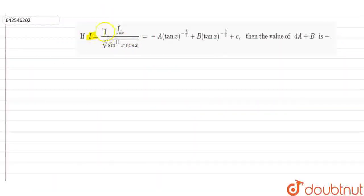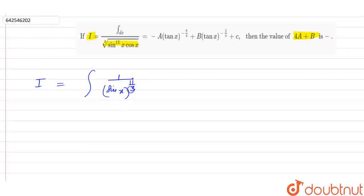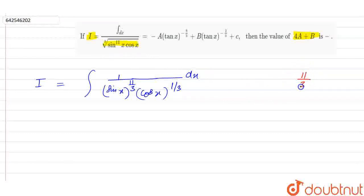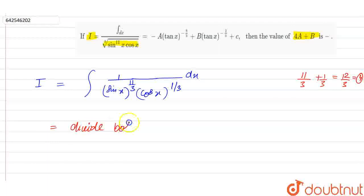So we have I as the integral of this term. We have to find 4a plus b. So I is equal to the integral of 1 upon sin(x) to the power 11/3, times cos(x) to the power 1/3, with respect to dx. In this type of question, we add the powers of sin and cos — that is 11/3 plus 1/3, which gives 12/3, that is 4. So we divide both the numerator and denominator by cos⁴(x).